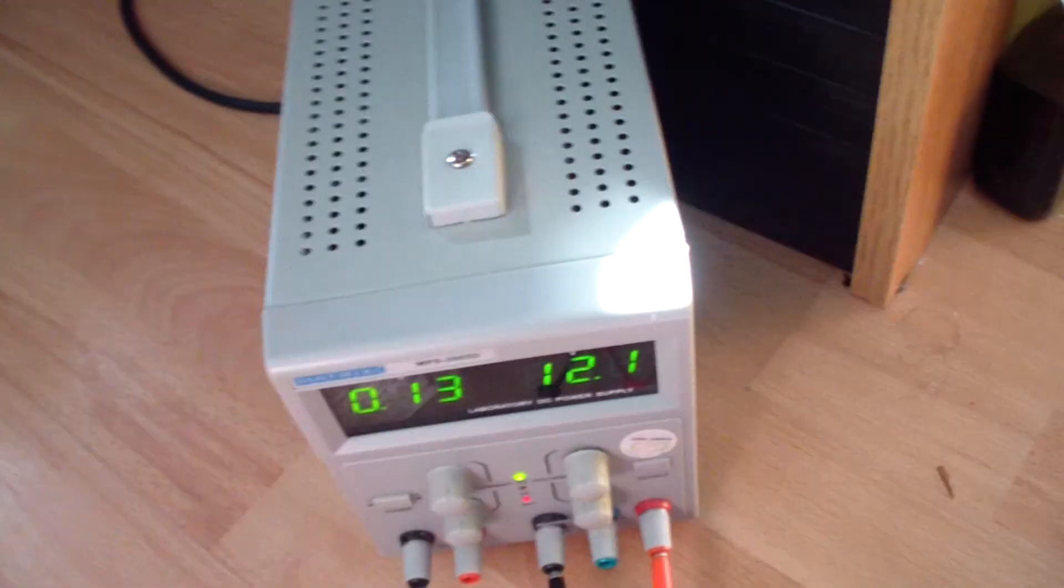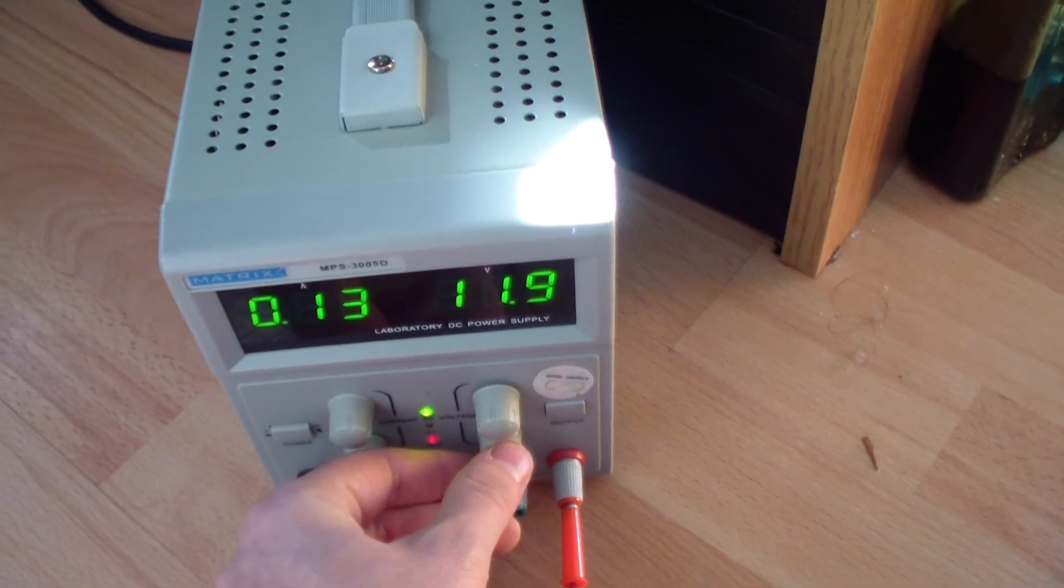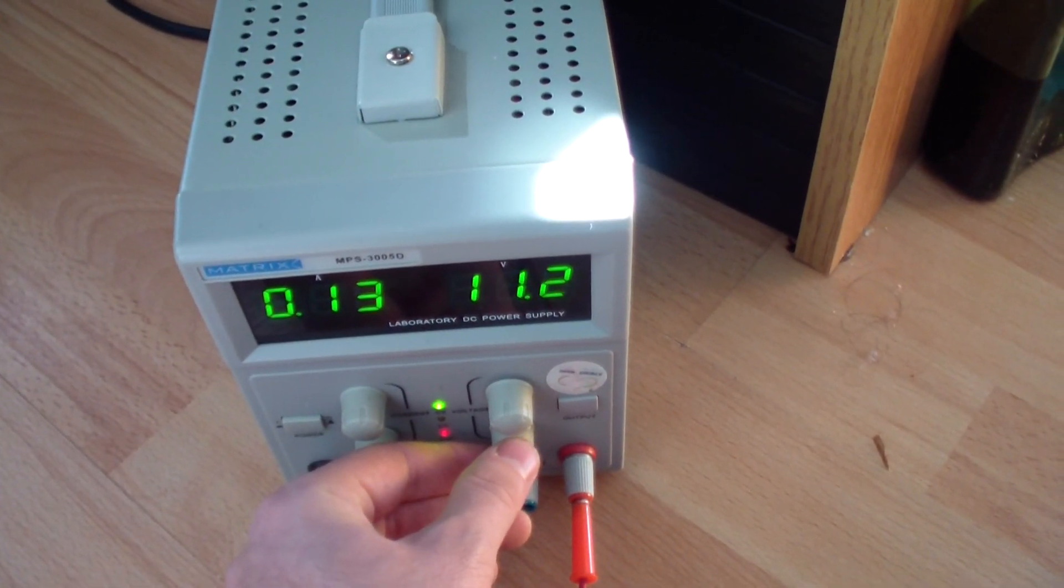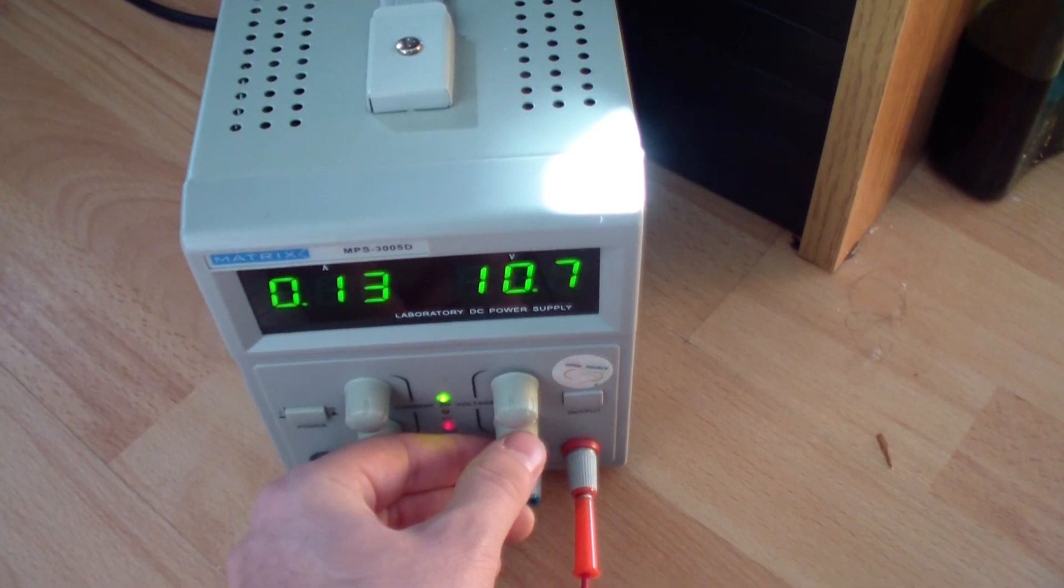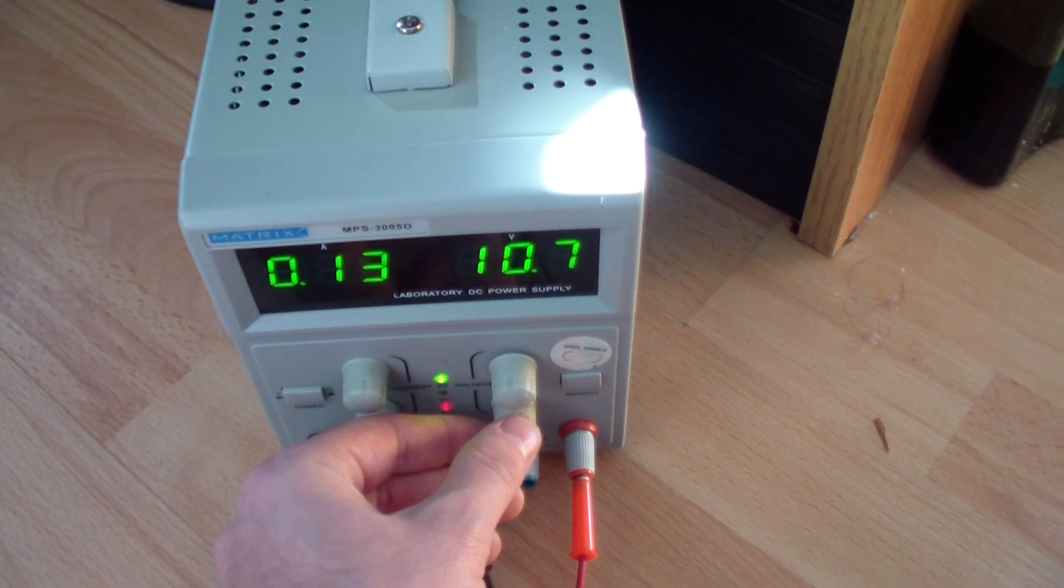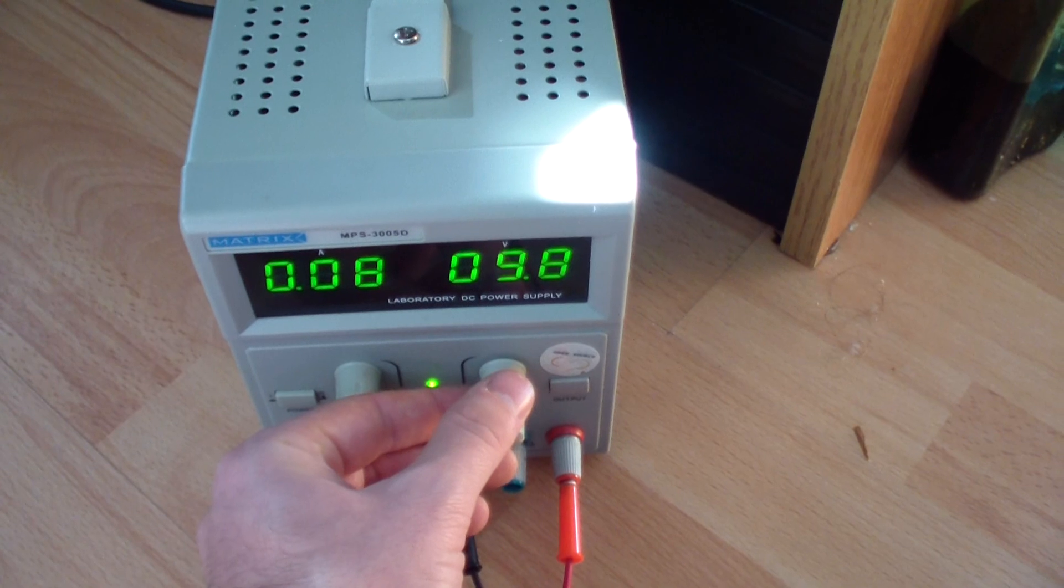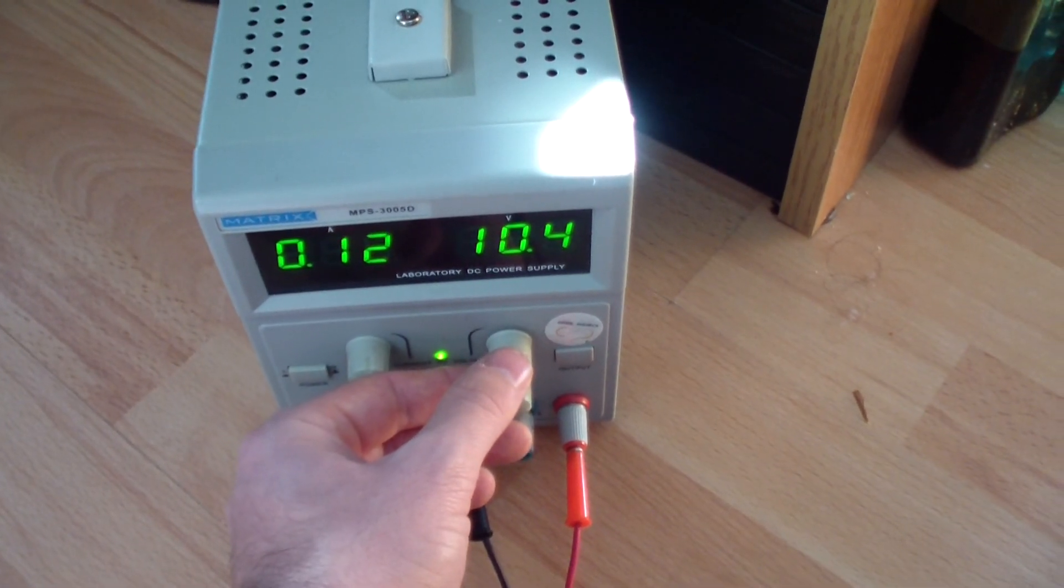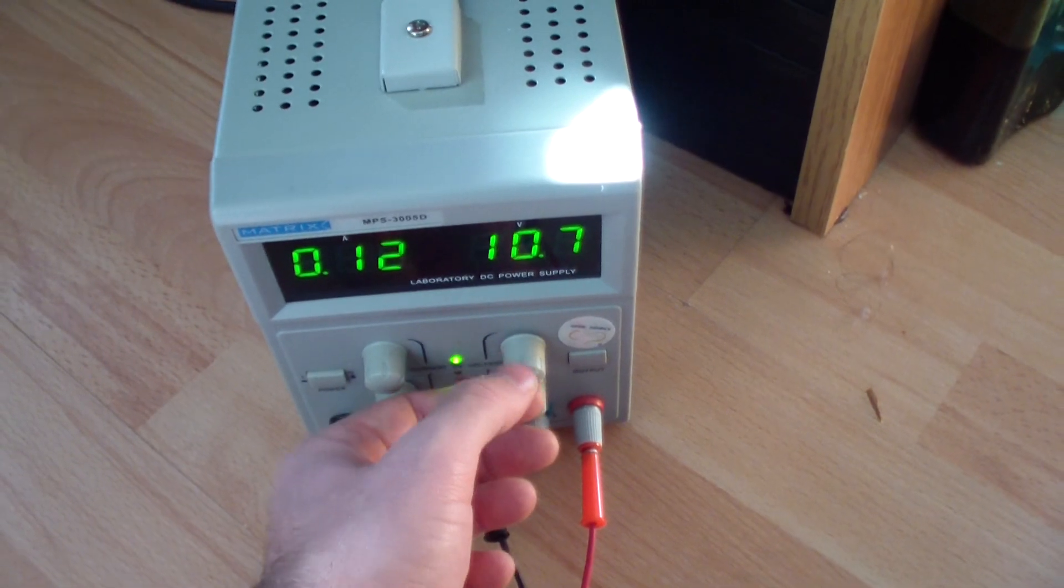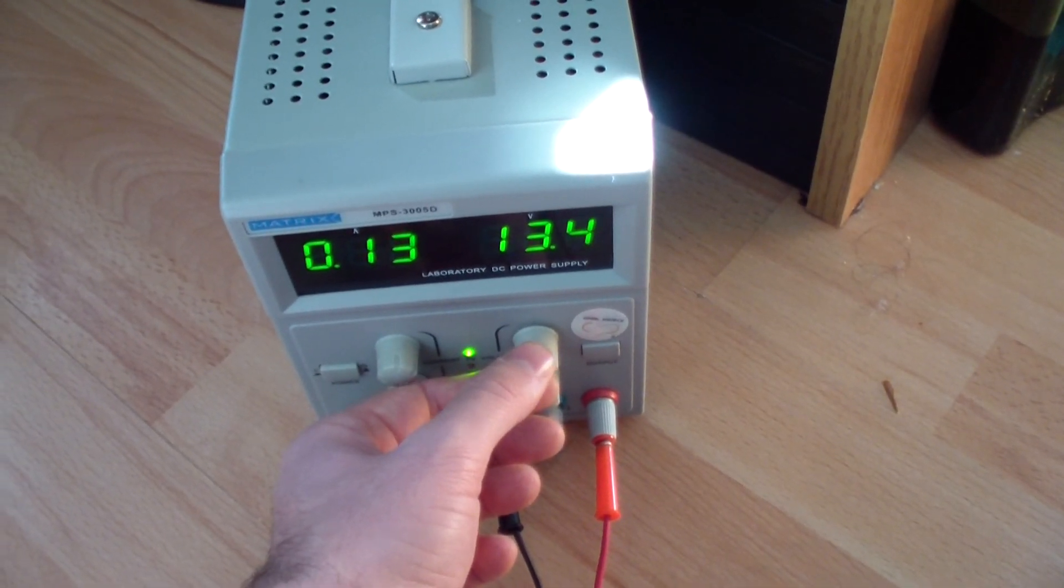One thing that I've noticed is that this circuit is working even at 10 volts. Let me show you. I'm adjusting the voltage, the current remains the same, 0.13 amps. And now it drops. As you can see, at 10.5 volts it is still working, and I will increase the voltage.